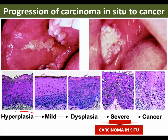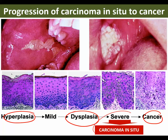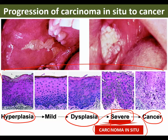They start with hyperplasia and will go to dysplasia, then they will become cancer. Severe dysplasia is called carcinoma in situ. The criteria for carcinoma in situ is that they should not break the basement membrane — the basement membrane should not be breached. If I keep this slide, I will hide the label and ask what is the change — it is carcinoma in situ.